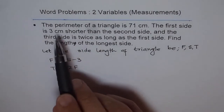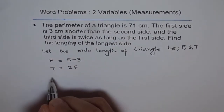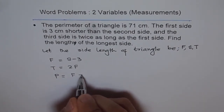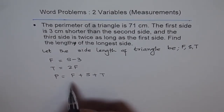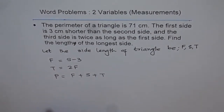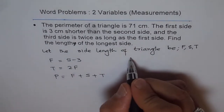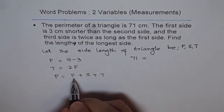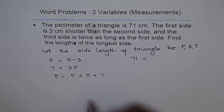We are also given that the perimeter is 71. The perimeter is the sum of all the sides, so F plus S plus T equals 71. We know the perimeter is 71, so now let's solve. We have 71 equals F plus S plus T.